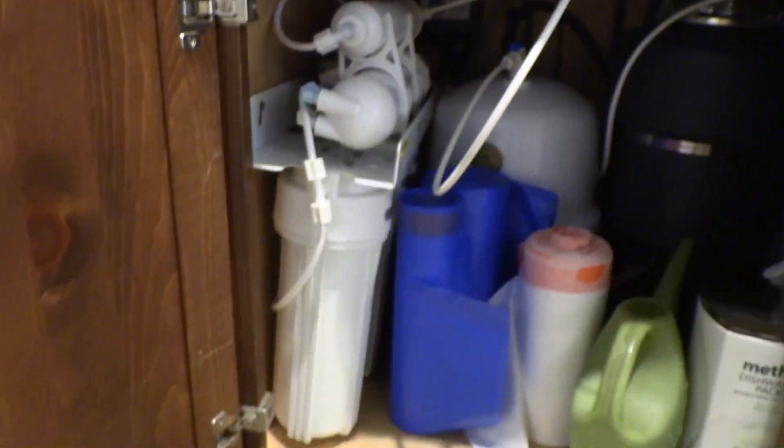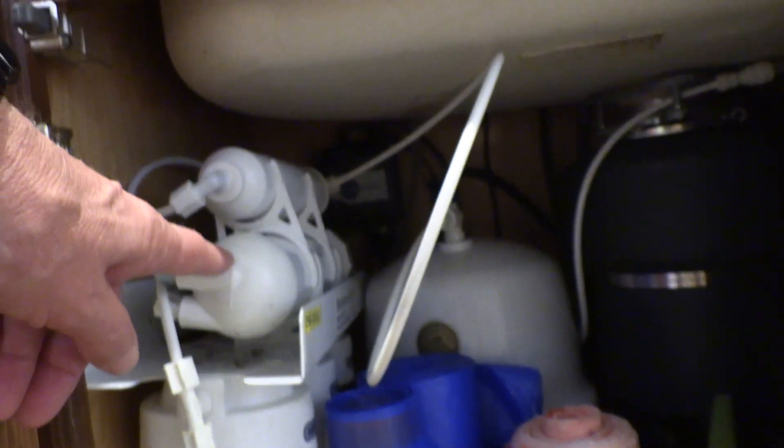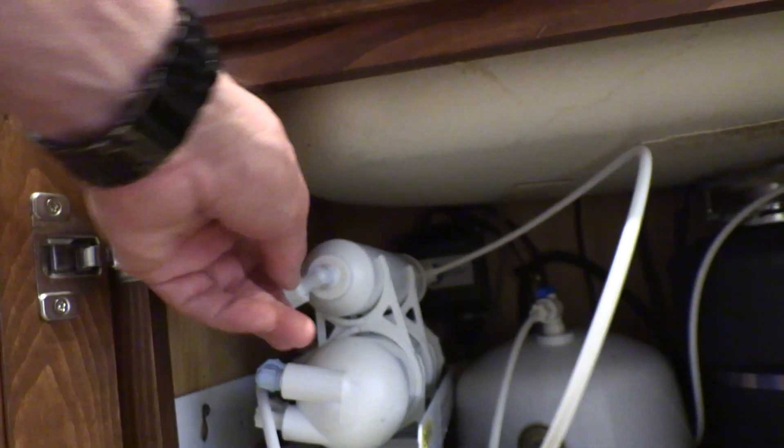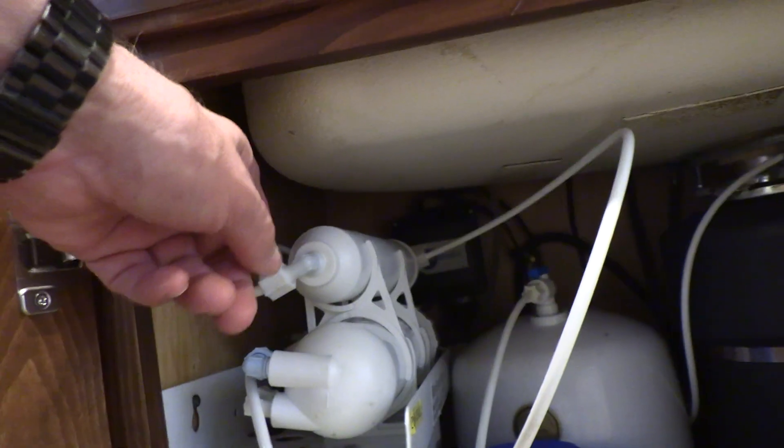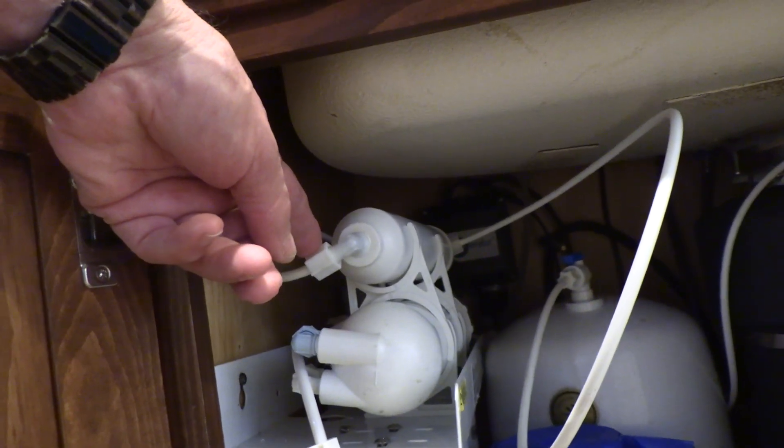So this is my RO system under the sink. First three are here. This is the fourth or the membrane and then the fifth. We're going to disconnect the fifth filter here, run that into the sixth, and then the sixth exits this tube which goes to the faucet.